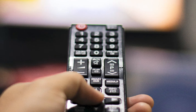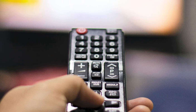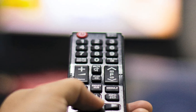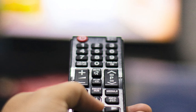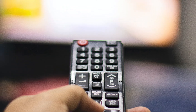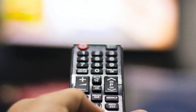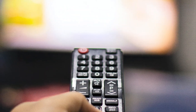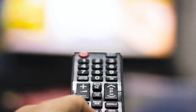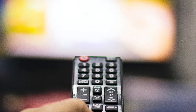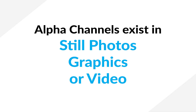So you have to define a new channel to the computer — an alpha channel. It's a way of telling the computer there is no color here, please show whatever is behind it. Alpha channels can exist in still photos, graphics, or in video.